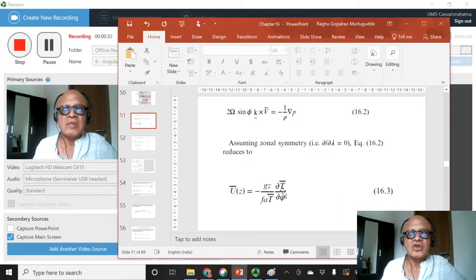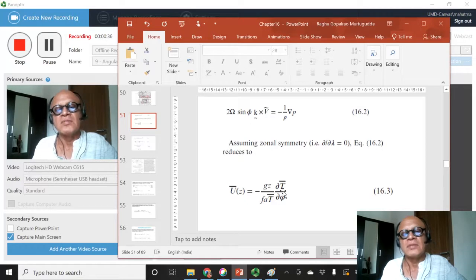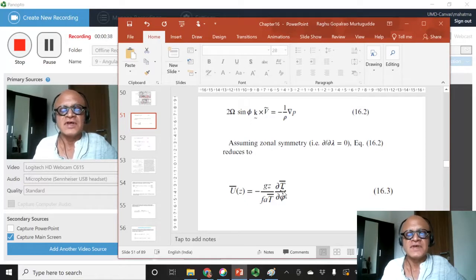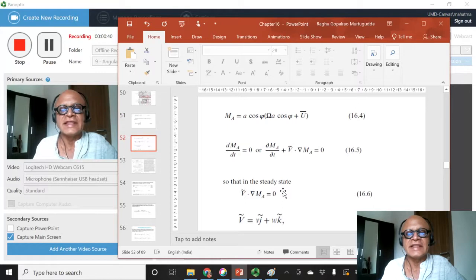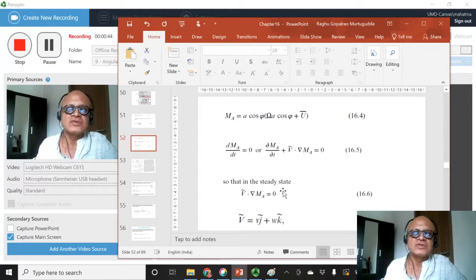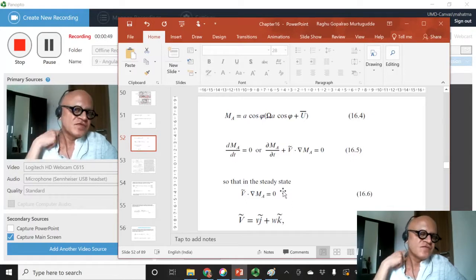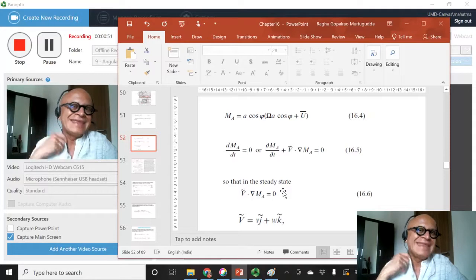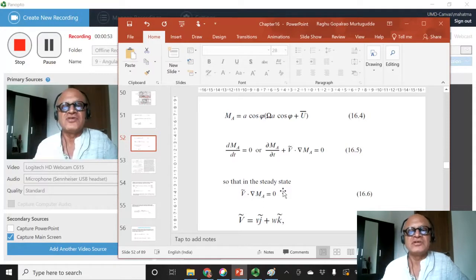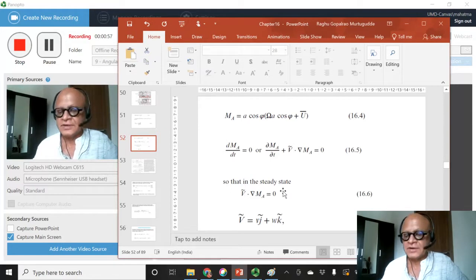We made simple arguments based on the equations of momentum and derived a thermal wind relation, then looked at angular momentum arguments to determine what needs to happen in terms of the angular momentum gradient in the meridional direction to drive the direct thermal circulation.